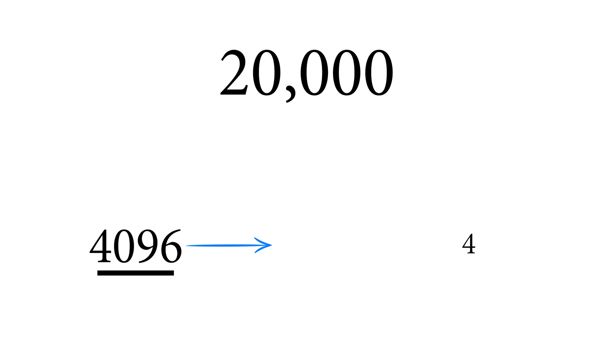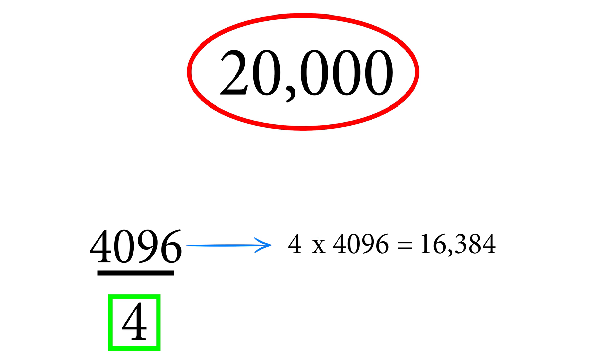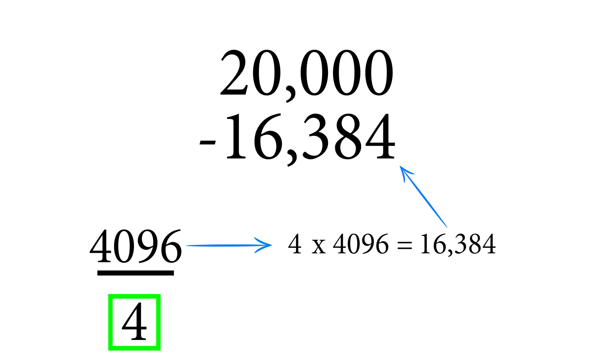So four, we're going to take four and do four times 4096. That gives us 16,384 and all we're going to do is one, we just figured out our first digit is four, and two, all we have to do is take our overall number that we're trying to solve for, the 20,000, and subtract whatever that gave us and we're left with 3616.